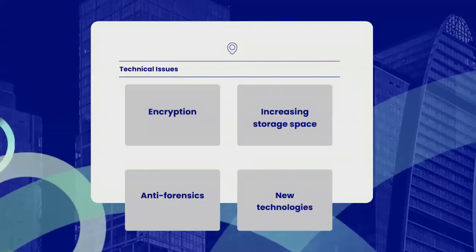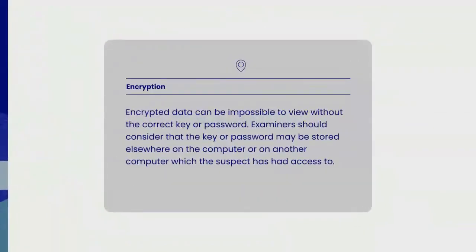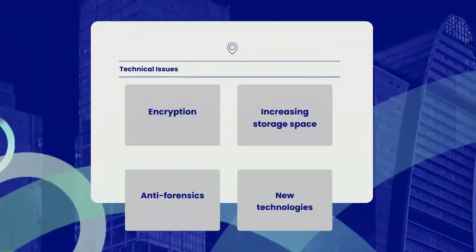The fourth technical issue is anti-forensics. Anti-forensics is the practice of attempting to thwart computer forensics analysis. This may include encryption, the overwriting of data to make it unrecognizable, the modification of file metadata, and file obfuscation. As with encryption, the evidence that such methods have been used may be stored elsewhere on the computer or on another computer which the suspect has had access to.